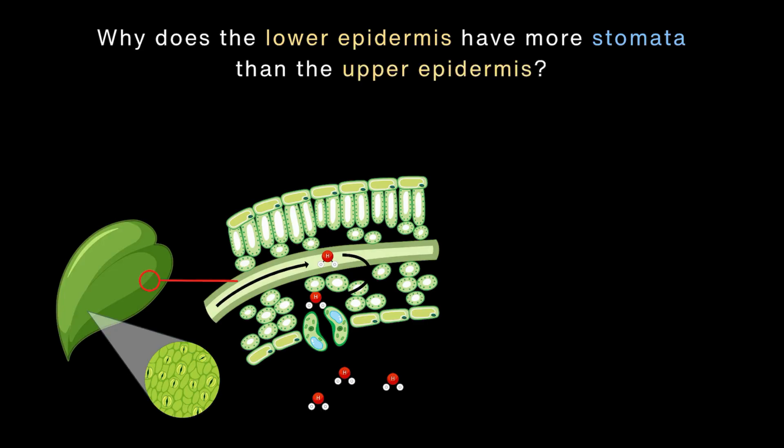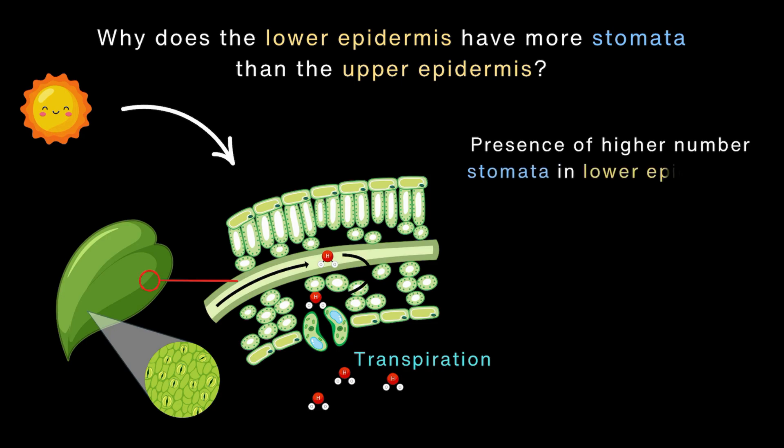Well, you see the upper epidermis gets the direct sunlight. It gets the direct sunlight which means it has a higher chance of losing water through transpiration. And to prevent too much water loss, more stomata are smartly placed on the lower epidermis because the lower epidermis does not receive direct sunlight.